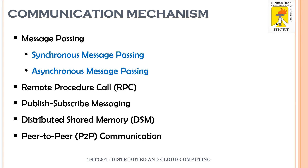The third mechanism is publish-subscribe messaging, a pattern where a publisher sends a message to a central broker. There is an intermediate — the broker — which receives the published message from the sender. The subscriber, that is the receiver, expresses interest in specific types of messages, and the broker routes those messages to the interested subscribers. There is no direct communication between sender and receiver; the broker handles everything.